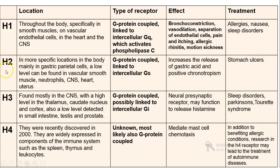H2 receptors are located mainly in gastric parietal cells. Low levels can also be found in vascular smooth muscle, neutrophils, the heart, and the uterus. These are also G protein-coupled receptors, linked to intracellular Gs protein.